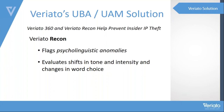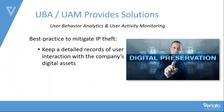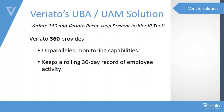A best practice to mitigate IP theft by departing employees is to keep detailed records of employee interaction with the company's digital assets. It would be impractical for a human supervisor to watch over every employee's shoulder. Automated user behavior monitoring such as Variato Recon or Variato 360 can keep a detailed record of every user's interactions. Variato captures information about every application and every window opened by a user every day — including when and how long employees use productivity applications, which applications they prefer, and someone gaining access to applications and files who should not.